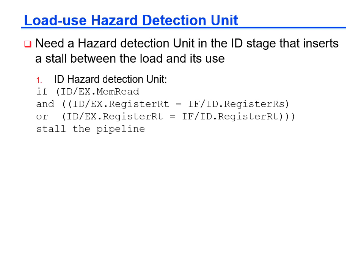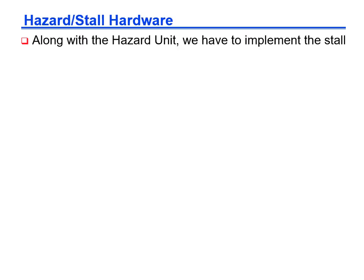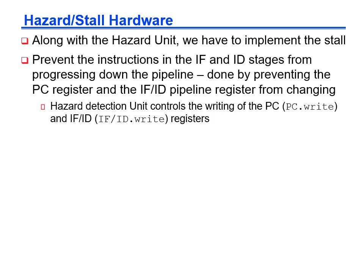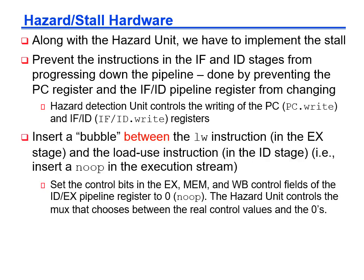To implement the stall, we will add a hazard detection unit in the decode stage that checks if the instruction currently in the execute stage is a load word instruction with a destination matching one of the source operands of the instruction in decode. If a match is made, the hazard unit will stall the pipeline for one cycle. Stalling is accomplished by making the control signals in the decode/execute interstage buffer zeros, which changes the dependent instruction into a no-op, and by disabling writing of the PC register and the IF/ID interstage buffer, causing fetch and decode to repeat. For the load-use hazard, a single stall cycle is all that is needed and the forwarding logic handles the rest.